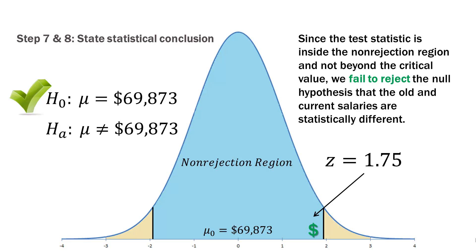Is the salary higher based on our sample? Yes. But can we say it is statistically different? No — and that's because of sampling error. This was just one sample; we could have taken many samples, and those other samples might be right in the middle of the non-rejection region. Remember, 5% of the time we expect to get a sample mean in either rejection region. This sample happens to be located right at the upper edge of the non-rejection region, so we conclude that the old and current salaries are not statistically different.